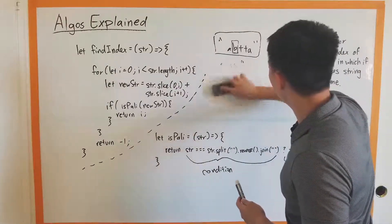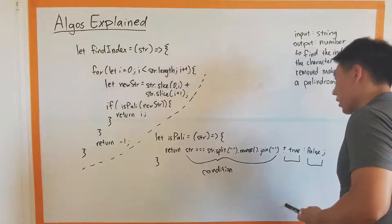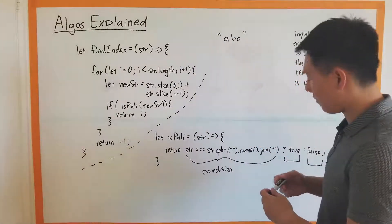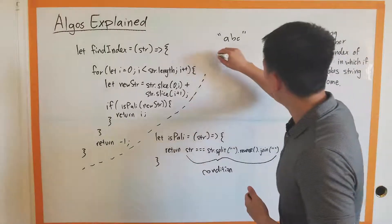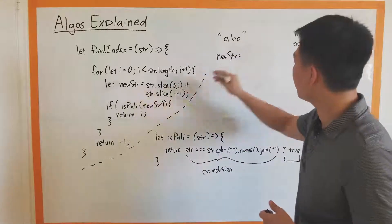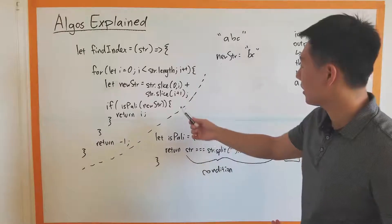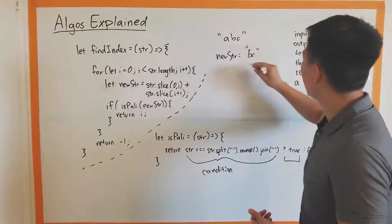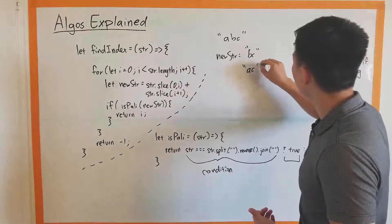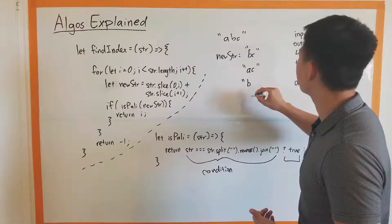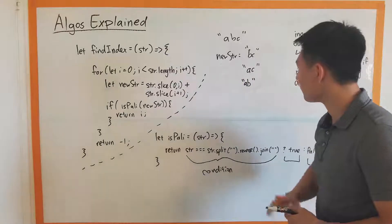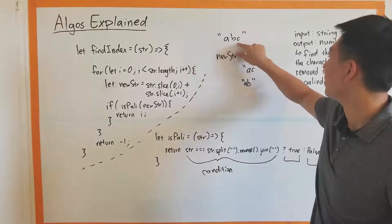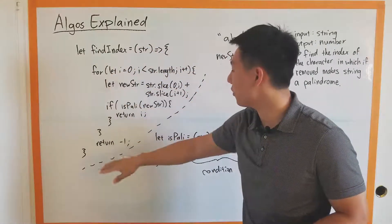Let's also quickly cover when we expect a negative one — using the example of A, B, C. Our new string at first is B, C — that's not equal to C, B, so it doesn't work. Next new string is A, C — same issue. Next is A, B — doesn't work either. We went through all options, tried taking A out, B out, C out — none worked. We exit the for loop and return negative one. That proves our function works.